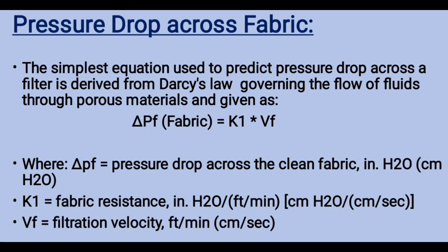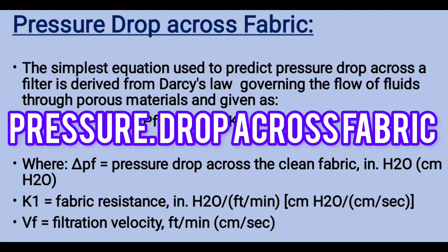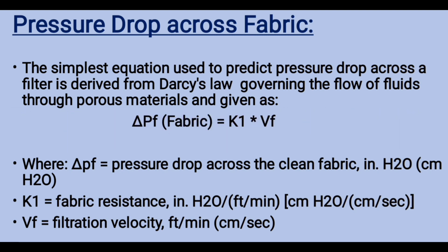Next, we will understand the pressure drop or delta P across the fabric. The simplest equation used to predict pressure drop across a filter is derived from Darcy's law, governing the flow of fluids through porous materials, and is given as: delta P_F = K1 × VF, where delta P_F is the pressure drop across the clean fabric, K1 is fabric resistance, and VF is filtration velocity.